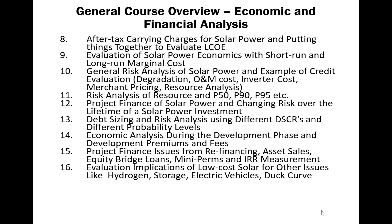Then once we have that, we'll see how do we compare something that you can control — a dispatchable project — with something that you can't quite control that might suddenly be fluctuating with clouds and so forth. How do you really compare the short-run and the long-run marginal cost of solar power with other resources? Should you compare it with a battery that you use for ancillary services? Should you only compare the cost of natural gas, and so on and so forth?